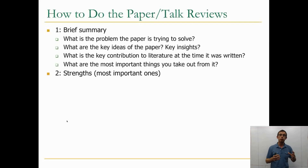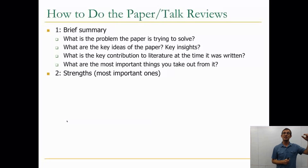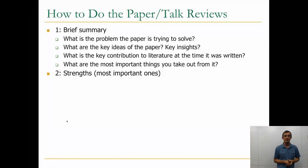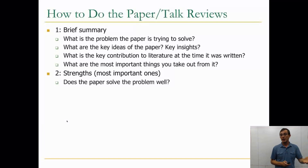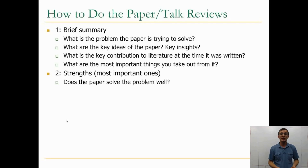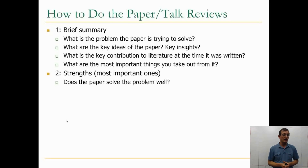The second part of the review is the strengths of the paper. Focus on the most important ones, ordered from biggest to smaller strengths — usually a bullet point list of two or three. The key question is: does the paper solve the problem well? For example, a strength could be a very simple solution to a difficult problem, or the elegance of the algorithm.